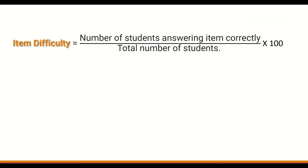To calculate item difficulty, count the number of students answering the item correctly, divide that by the total number of students, then multiply the product by 100 to generate an item difficulty percentage.